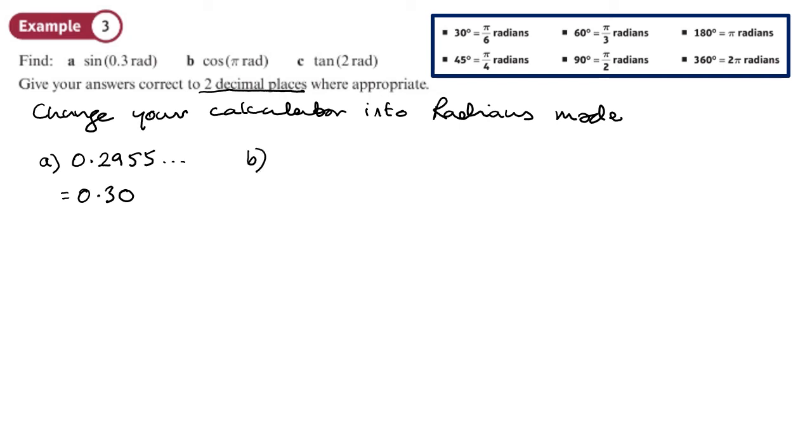The cos of pi radians, which I suppose is the same as doing the cosine of 180 degrees. But as I said, don't change it into degrees and try and work it out. That way it's much easier to change the mode on your calculator. And this will give you 1.